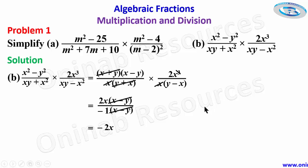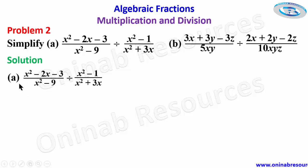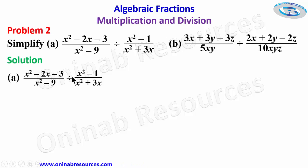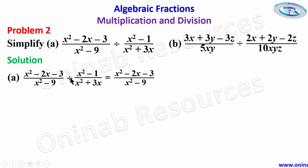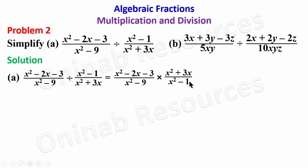We go to problem 2. For problem 2a we have x squared minus 2x minus 3 over x squared minus 9, divided by x squared minus 1 over x squared plus 3x. To find the solution, we change the division to multiplication. We maintain the first fraction and interchange the numerator and denominator of the second fraction, so we now have x squared plus 3x over x squared minus 1.